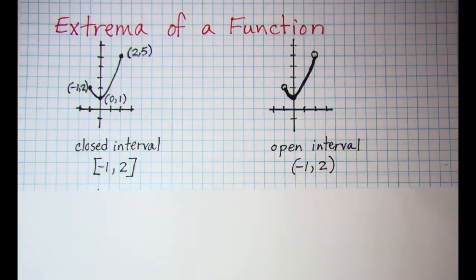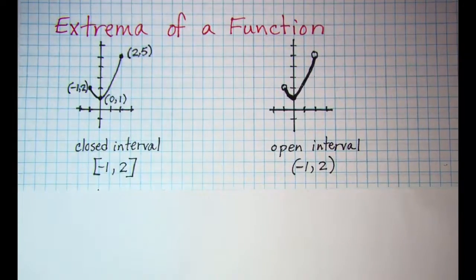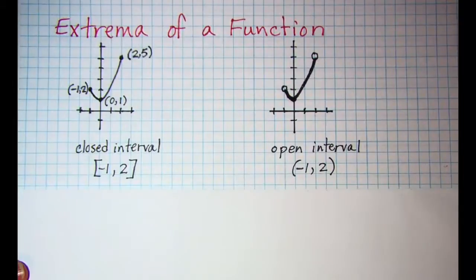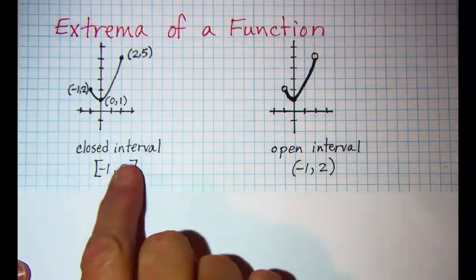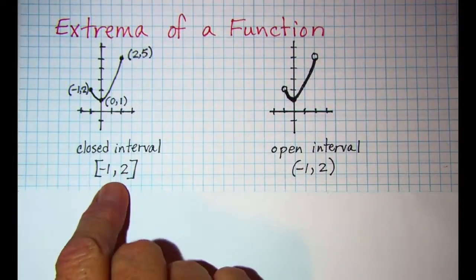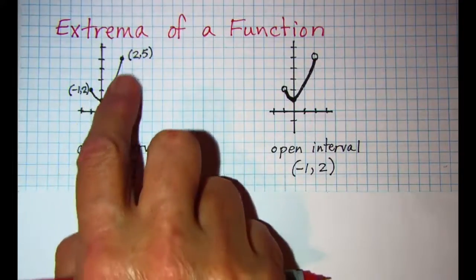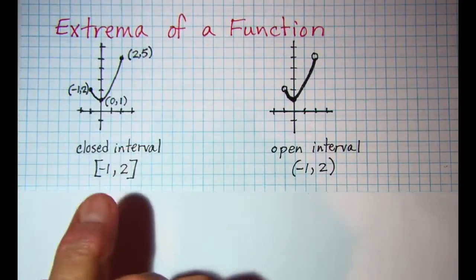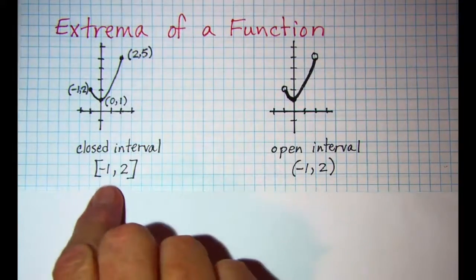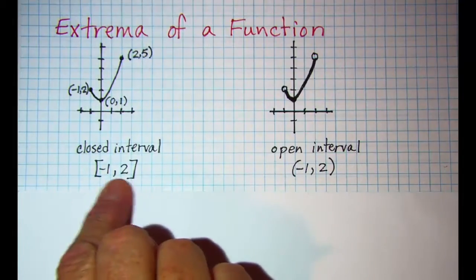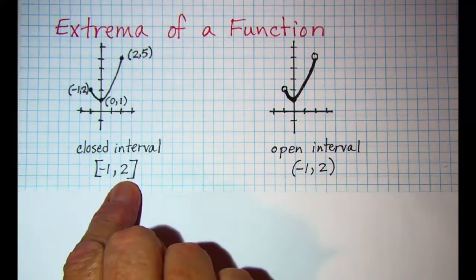Let's look at some curves and see if we can pick out extrema. First one that we'll look at is this piece of the function x squared plus one. We're just going to look at the closed interval from negative one to two.